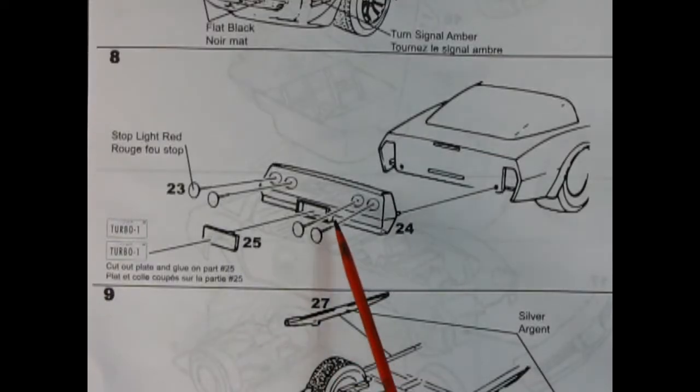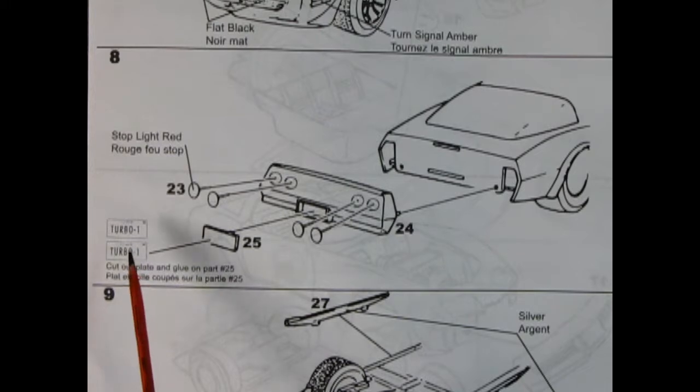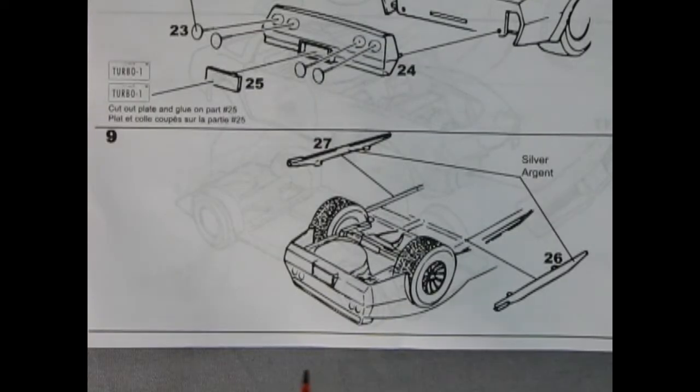Panel 8 shows the rear bumper being pushed into place with our four red Corvette tail lamps going on and then our license plate. Here it says to cut out plate and glue on part number 25. These say Iowa Turbo 1. Then once you get the back end figured out all you need to do is put on these nice side pipes and you're ready to roll.